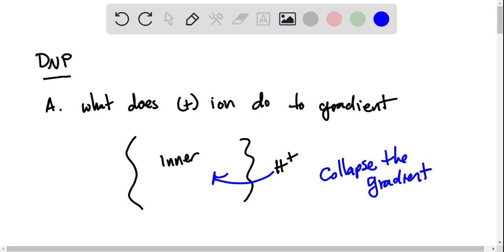So what does this extra hydrogen ion do? It just completely destroys the whole gradient, which leads us into part B.